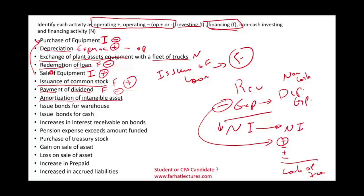Amortization of intangible assets follows the same concept as depreciation. Depreciation is for tangible assets; amortization is for intangible assets. Therefore, it's operating and we will add to cash flow — the same concept as depreciation.